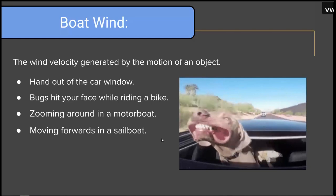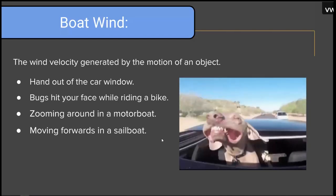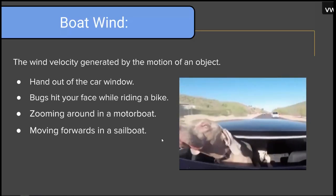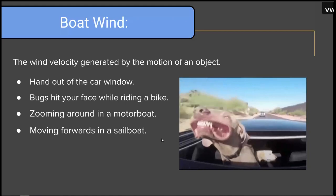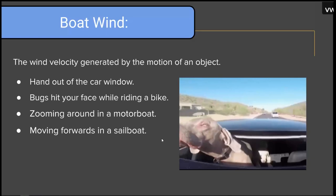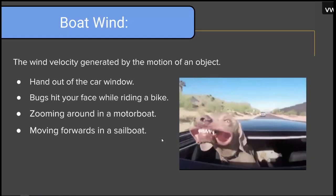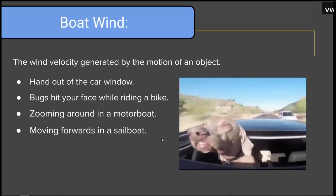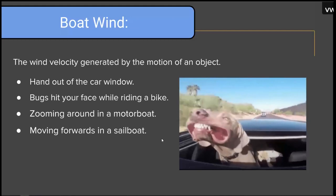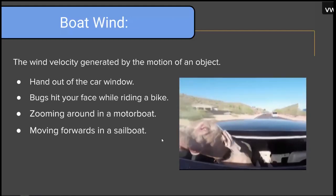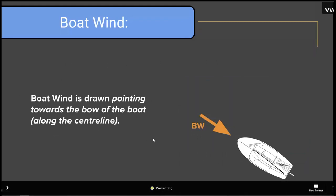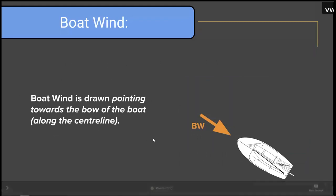The next one we need to be aware of is the boat wind. The boat wind is the wind velocity generated by the motion of an object — like when you stick your hand out a car window, when a bug hits you in the face while riding a bike, when your hat flies off in a motorboat, or when you're moving forwards in a sailboat. By convention, the boat wind is drawn pointing towards the bow of the boat along the center line.